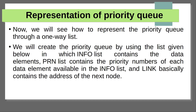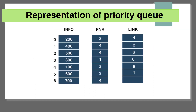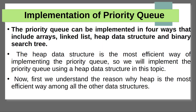Representation of priority queue: it consists of three parts. One is the information — the elements and numbers exist in the information part. PNR means the priority. Link means one node is connected to another node. There are four data structures used to represent the priority queue: array, linked list, heap data structure, and binary search tree.